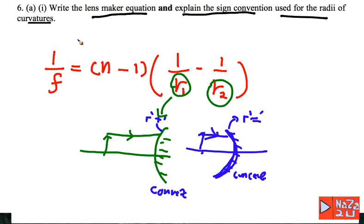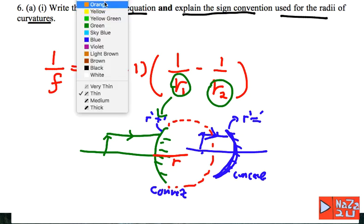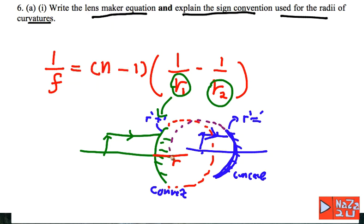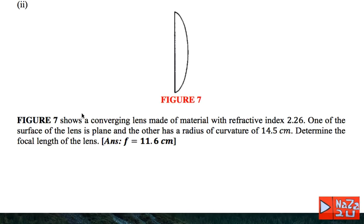Looking at the diagram for the convex mirror, this is the radius of curvature R. And for the concave mirror, this is also the value of the radius R.